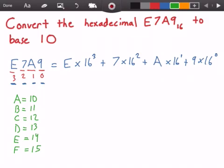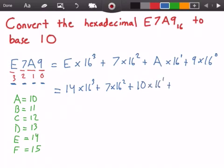Let's rewrite this. Now we have 14 times 16 to the power of 3, plus 7 times 16 to the power of 2, plus 10 times 16 to the power of 1, plus 9 times 16 to the power of 0.